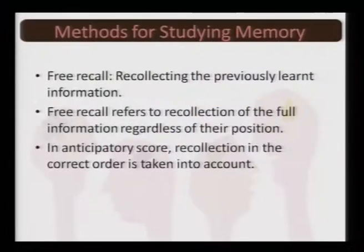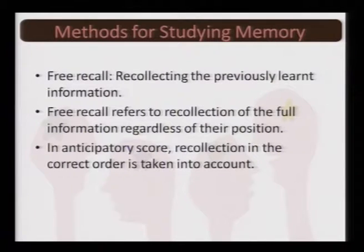So something given on the top, middle, or bottom can be randomly recollected. In anticipatory scoring, recollection in the correct order is taken into account.